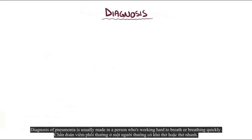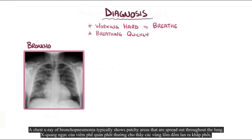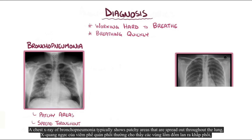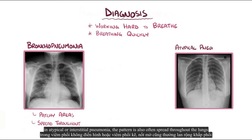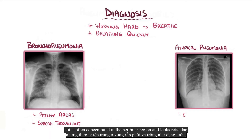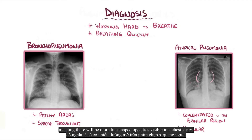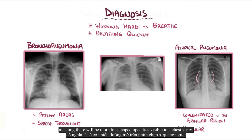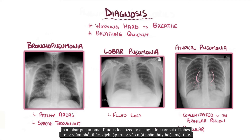Diagnosis of pneumonia is usually made in a person who's working hard to breathe or breathing quickly. A chest X-ray of bronchopneumonia typically shows patchy areas spread throughout the lung. In atypical or interstitial pneumonia, the pattern is also often spread throughout the lungs, but concentrated in the perihilar region and looks reticular, meaning there will be more line-shaped opacities visible on the chest X-ray. In lobar pneumonia, fluids are localized to a single lobe or set of lobes.